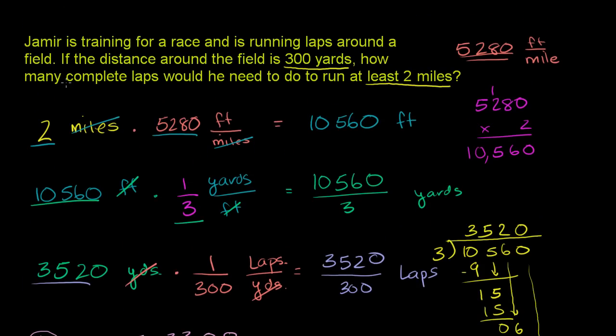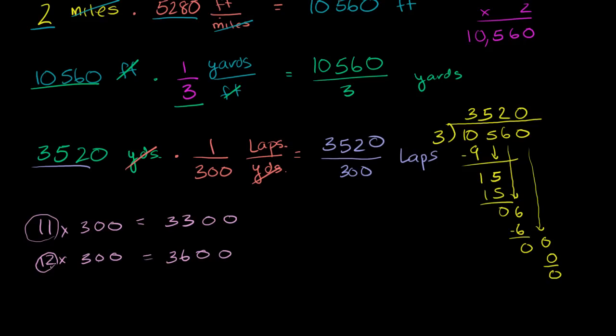But let's make sure we're answering their question. How many complete laps would he need to do to run at least 2 miles? So they're telling us that, this might be 11 point something something something laps, and that would be the exact number of laps to run 2 miles. But they say, how many complete laps does he have to run? 11 complete laps would not be enough. He would have to run 12. So our answer here is 12 complete laps.